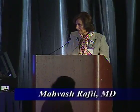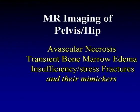I'm speaking on MR imaging of the hip, basically less of the pelvis bone. In the half hour that I have, I'm going to discuss avascular necrosis of the femoral head, transient bone marrow edema, and insufficiency and stress fractures of the femoral head and vicinity of the hip joint, and those few other entities that may mimic changes of these other entities and become important in the differential diagnosis.